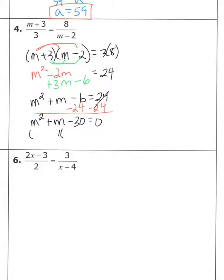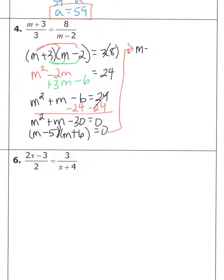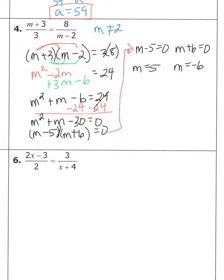Now we factor. Ask yourself: what factors of 30 subtract to give you one? That's five and six. Six is bigger, so it carries the same sign as the middle term — positive. Five is negative. Setting m minus five equal to zero gives m equals five, and m plus six equal to zero gives m equals negative six. The restriction is m cannot equal two (from m minus 2 in the denominator). Neither five nor negative six equals two, so both are good solutions.